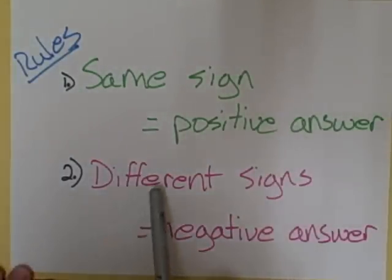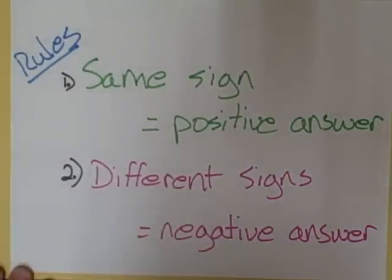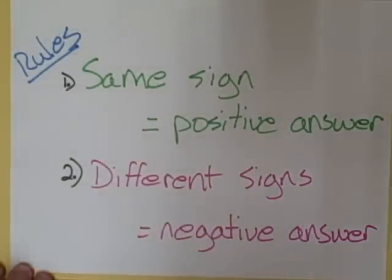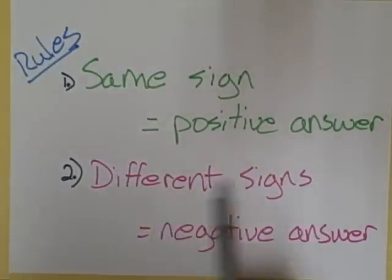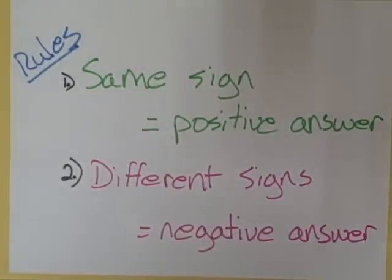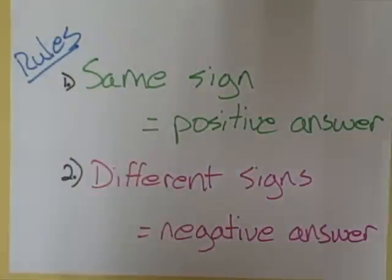Rule number two: if the signs are different — if you have a negative divided by a positive, or a negative multiplied by a positive — then your answer is actually going to be negative. Different signs, negative answer; same signs, positive answer.